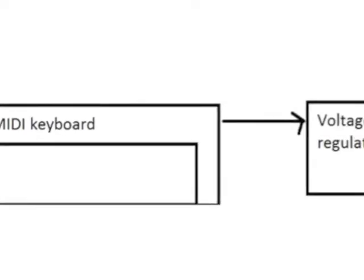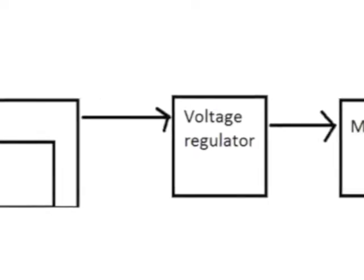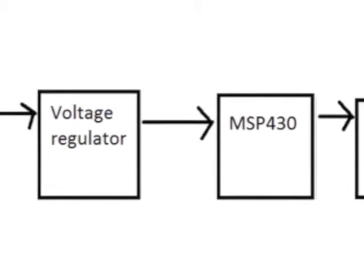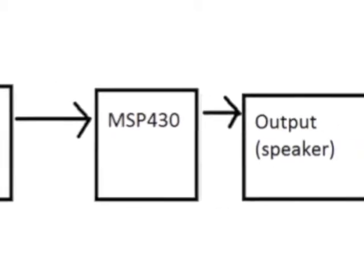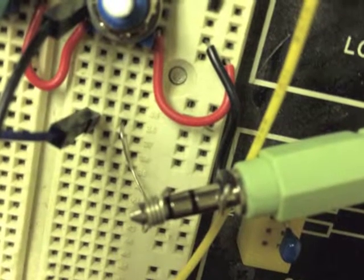The MSP430 is programmed to read those MIDI signals, determine what note to play, and output the desired frequency to a speaker or amplifier. Here's the output pin crudely connected to an audio cable.